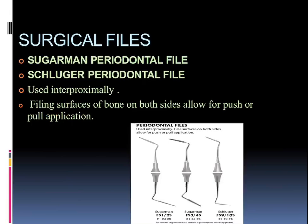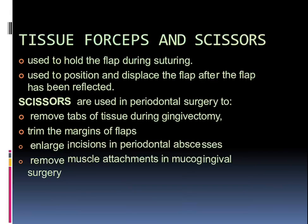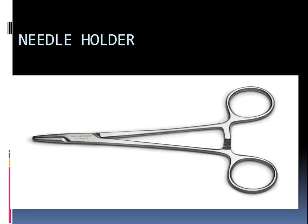Talking about tissue forceps and scissors: tissue forceps are used to hold the flap during suturing, for positioning and displacing the flap after it has been reflected. Scissors are used in periodontal surgery to remove tags of tissue during gingivectomy, to trim the margins of flaps — Castroviejo scissors can be used — to enlarge the incision in periodontal abscesses, and to remove muscle attachments in mucogingival surgeries.